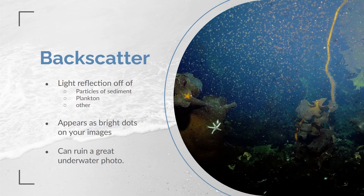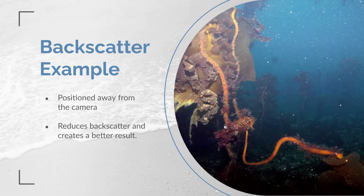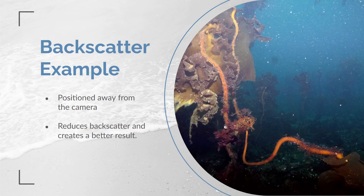Backscatter is caused by particles such as sediment or plankton being illuminated by lights, and it can present another challenge in collecting quality data. Backscatter has to do with the positioning of the LEDs, their beam angles, and the overlap with the camera field of view. When the LED is positioned directly next to the camera, there is a lot of backscatter. Positioning the lights further from the camera reduces backscatter, and reducing the light output can eliminate foreground backscatter. It's important to select LEDs that match your application — backscatter can be reduced with an LED designed to match the camera field of view.